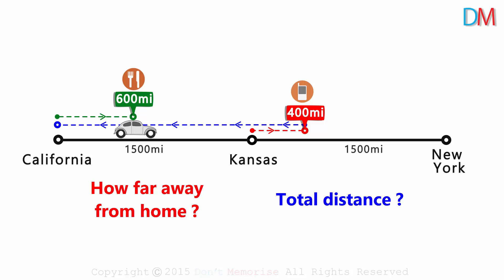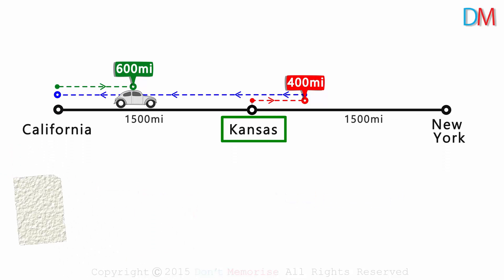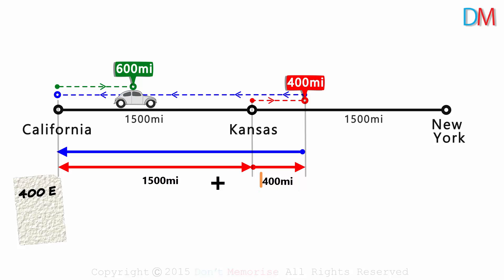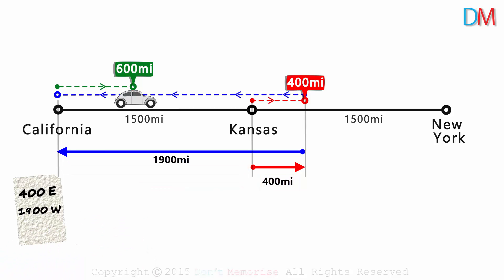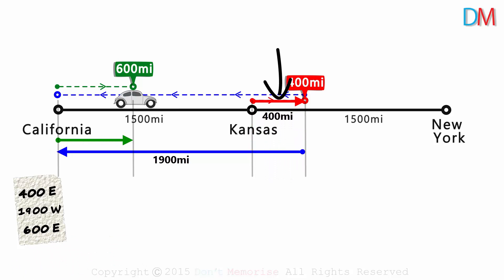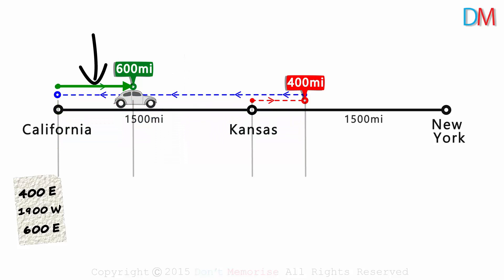How much distance have you covered travelling back and forth? Let's note down the sequence of events assuming your home as the reference point. First, you travelled 400 miles to the east. Then from this point, you travelled to California — that distance would be 400 plus 1500, which is 1900 miles towards the west. And from California, you travelled 600 miles to the east. So this distance is 400 miles, this entire distance is 1900 miles, and this distance is 600 miles.